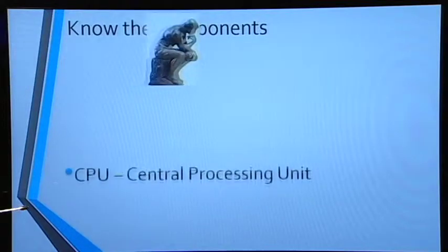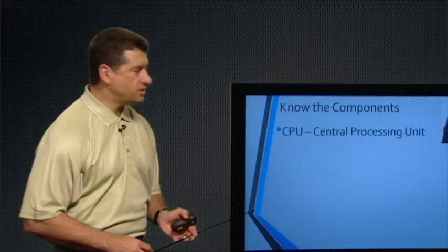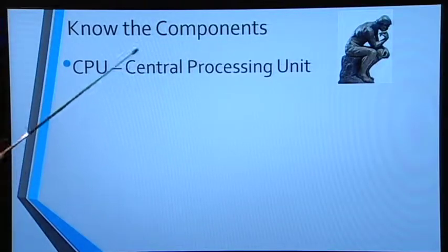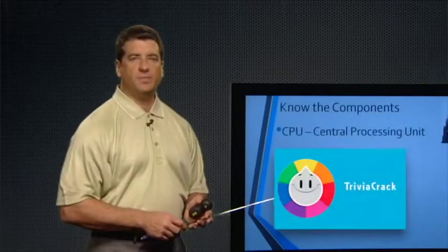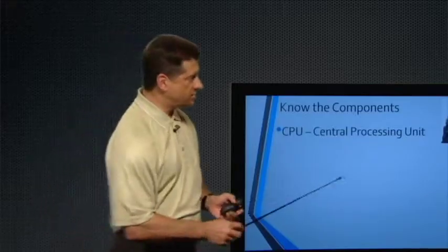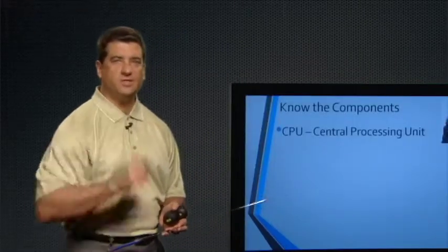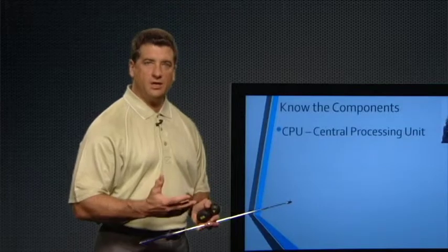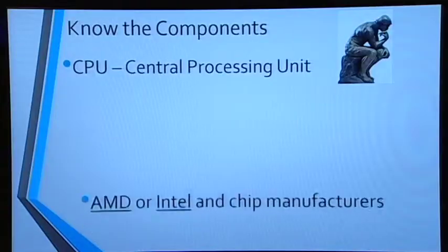The second big component to look for is the CPU — the Central Processing Unit. This is where all the thinking and processing of the computer gets done when you tell it what to do. Obviously the more processing power we have, the faster our computer is. The more processing power, the faster your computer is going to work — and it relates back to why you're using it.